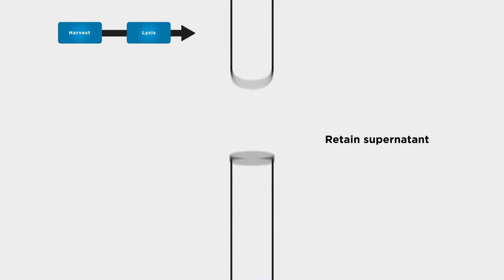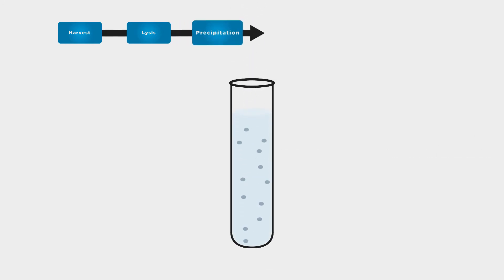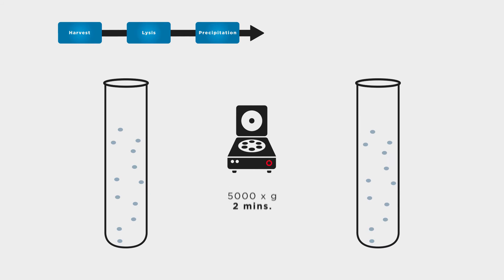Retain the supernatant and transfer to a new centrifuge tube. Viral particles can be precipitated from the supernatant using polyethylene glycol, followed by low-speed centrifugation. This creates a pellet containing viral particles.